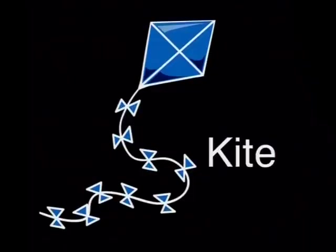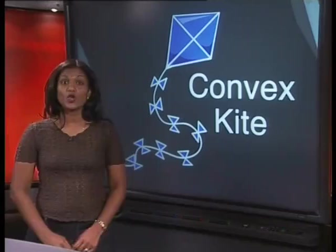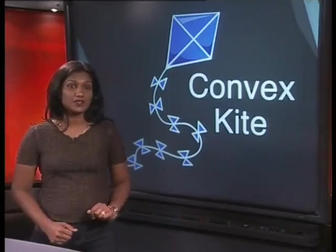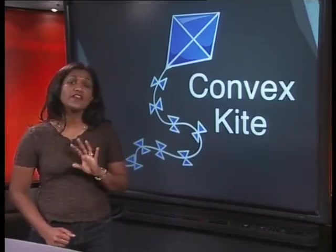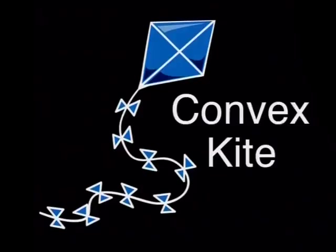So, the kite has two adjacent sides equal here and two adjacent sides equal here. To be more specific, this shape is called a convex kite. Why is it convex? What property determines whether or not a shape is convex? If you need a clue, think about the diagonals.